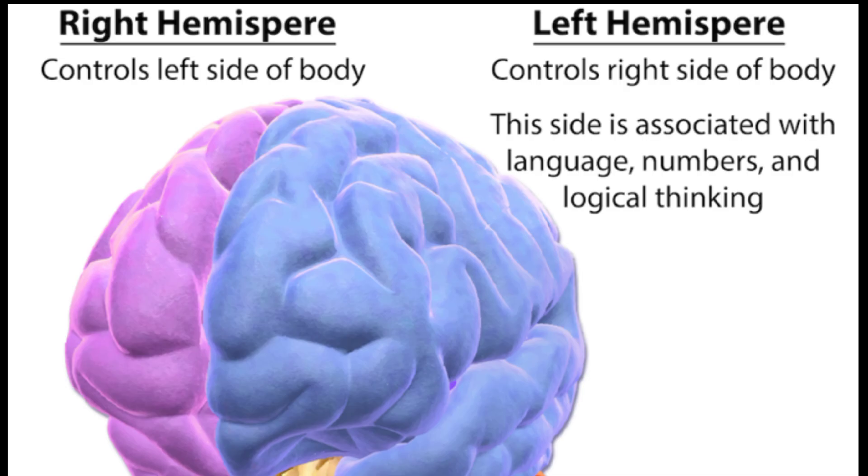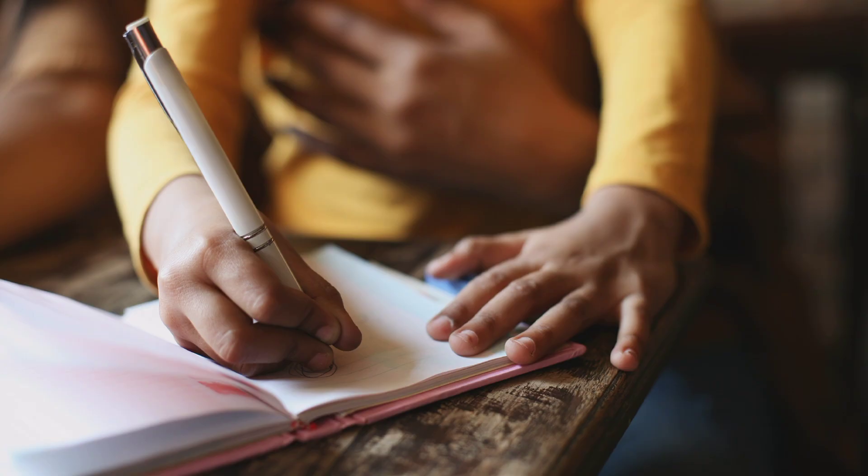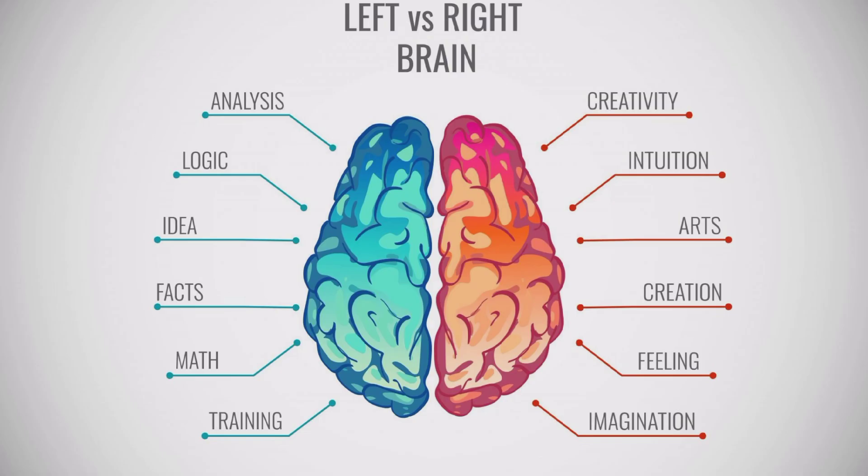Interestingly, the left hemisphere of our brain controls the right side of our body, while the right hemisphere governs the left side. This means that most right-handers have a dominant left hemisphere, which is associated with language and analytical thinking.